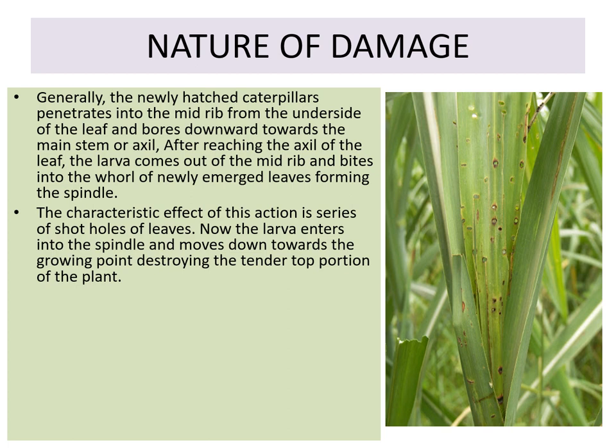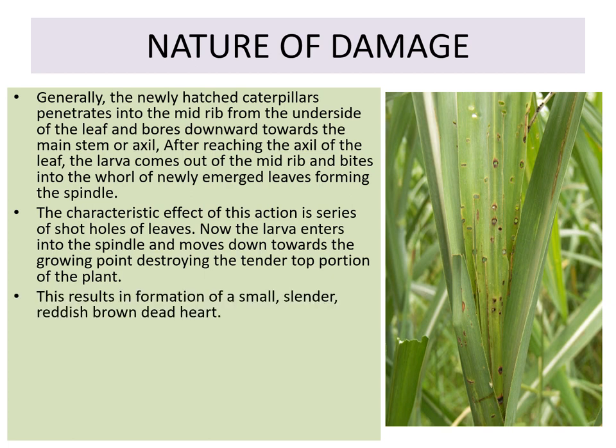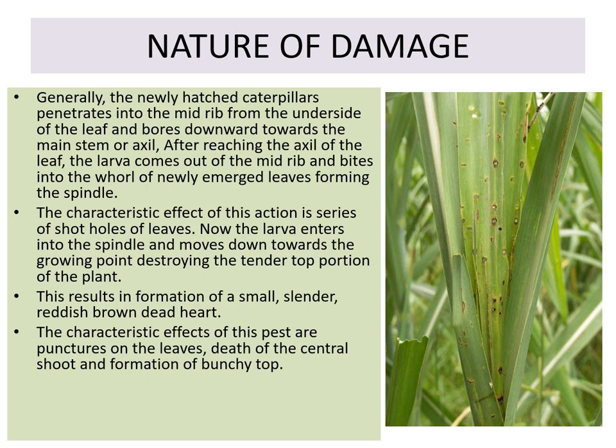The larva then enters the spindle and moves downwards to the growing point, destroying the tender top portion of the plant. This results in the formation of small, slender, reddish-brown dead hearts. The characteristic effects of this pest are punctures on the leaf, death of the central shoot, and formation of bunchy tops.